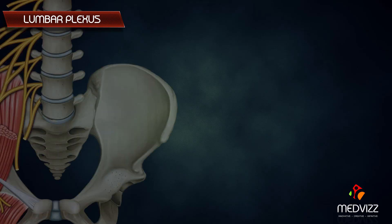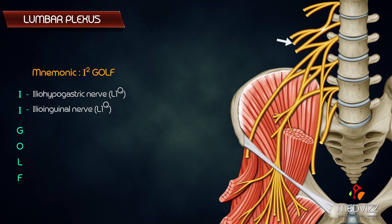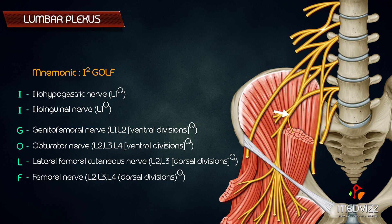The best way to remember all branches arising from the lumbar plexus is by the mnemonic 'I² GOLF.' I² represents two nerves starting with 'I': iliohypogastric and ilioinguinal, both with root value L1. G stands for genitofemoral nerve (L1, L2 — ventral divisions). O stands for obturator nerve (L2, L3, L4 — ventral divisions). L stands for lateral femoral cutaneous nerve (L2, L3 — dorsal divisions). F stands for femoral nerve (L2, L3, L4 — dorsal divisions). And the final letter refers to the accessory obturator nerve (L3, L4 — ventral divisions), seen only occasionally.